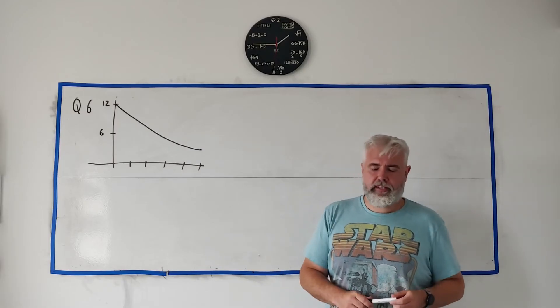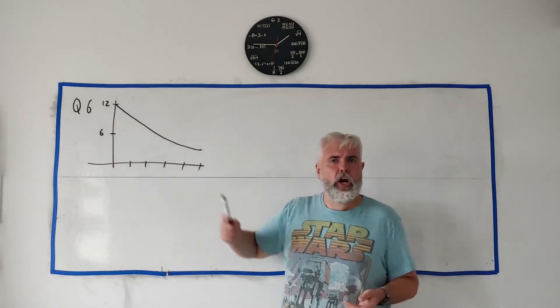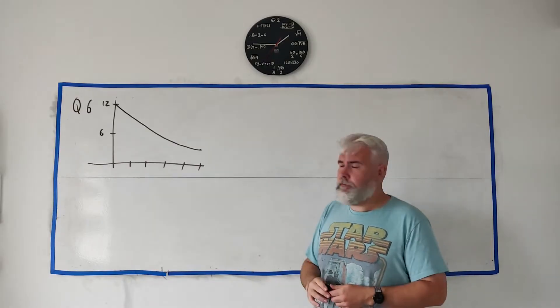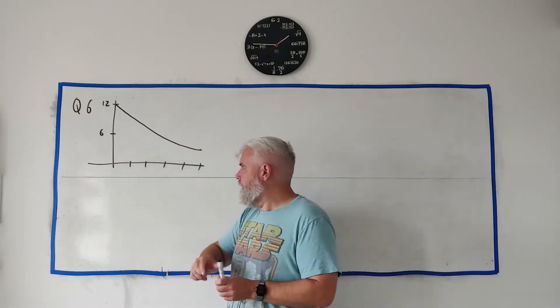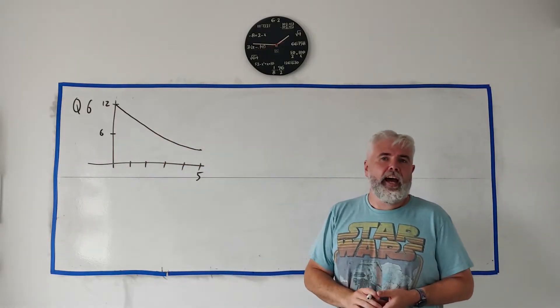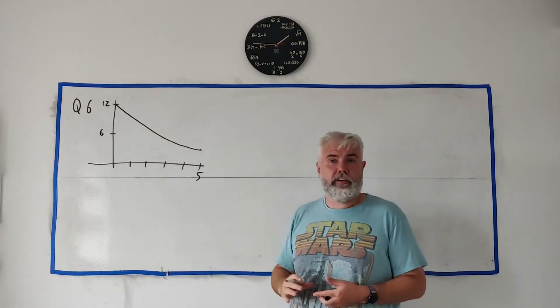In question 6 they give us a graph that I've copied slightly here. It's not very accurate. It's of a function between x = 0 and 5, and it looks something like this. They ask you a couple of questions using the graph to get information.